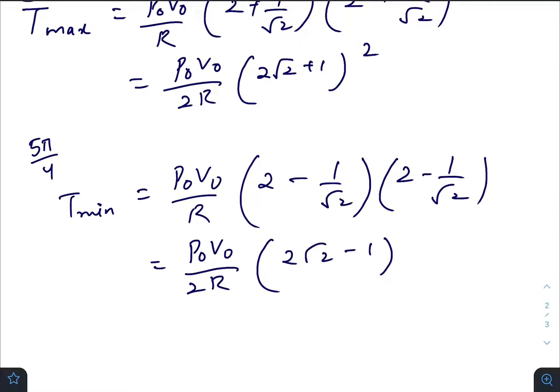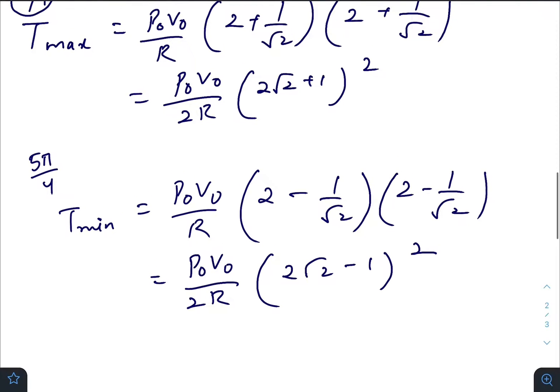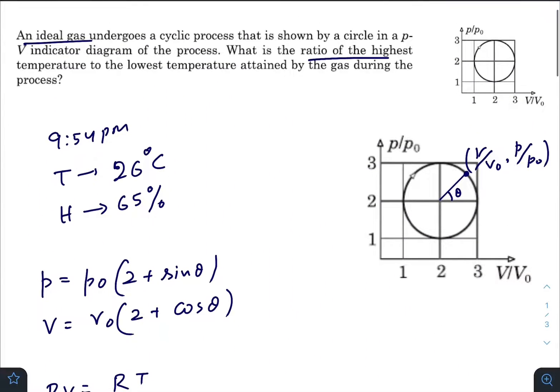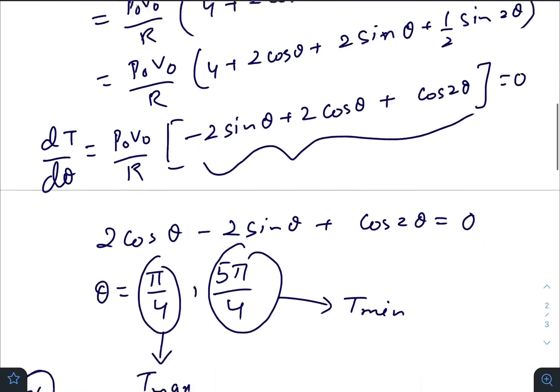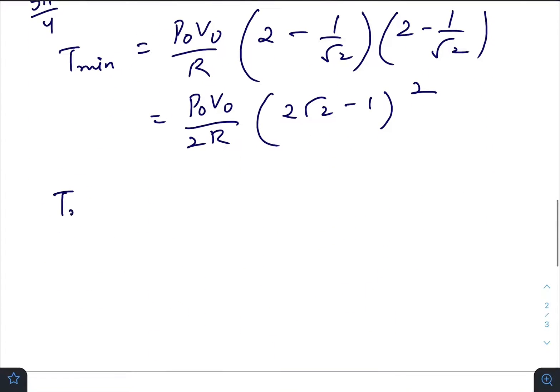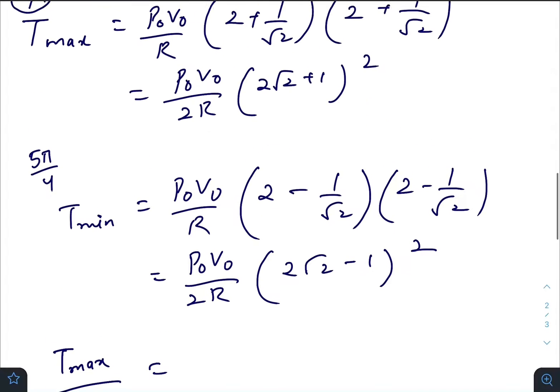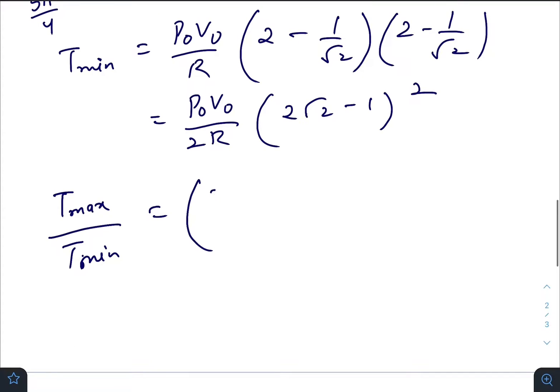(√2 - 1)². In our question they have asked that we need to find out the ratio of highest temperature to the lowest temperature. So T_max by T_min, so this constant gets cancelled out and our final answer becomes (√2 + 1)² divided by